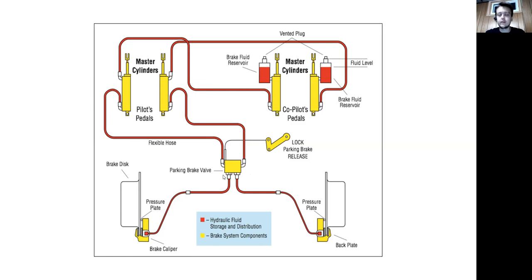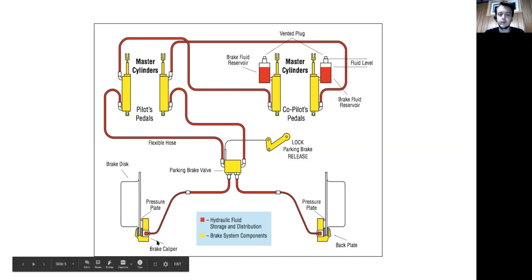When you activate the parking brake, it provides pressure to the brake caliper so that it keeps those brake linings clamped down on the brake disc, which enables the aircraft to stay stationary when it's parked.